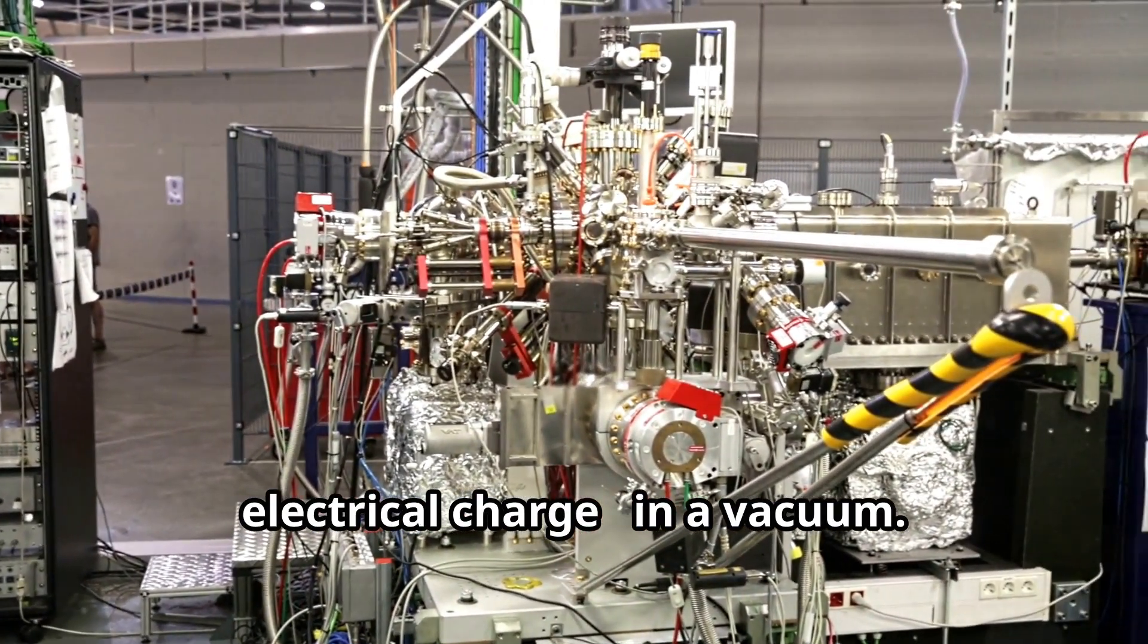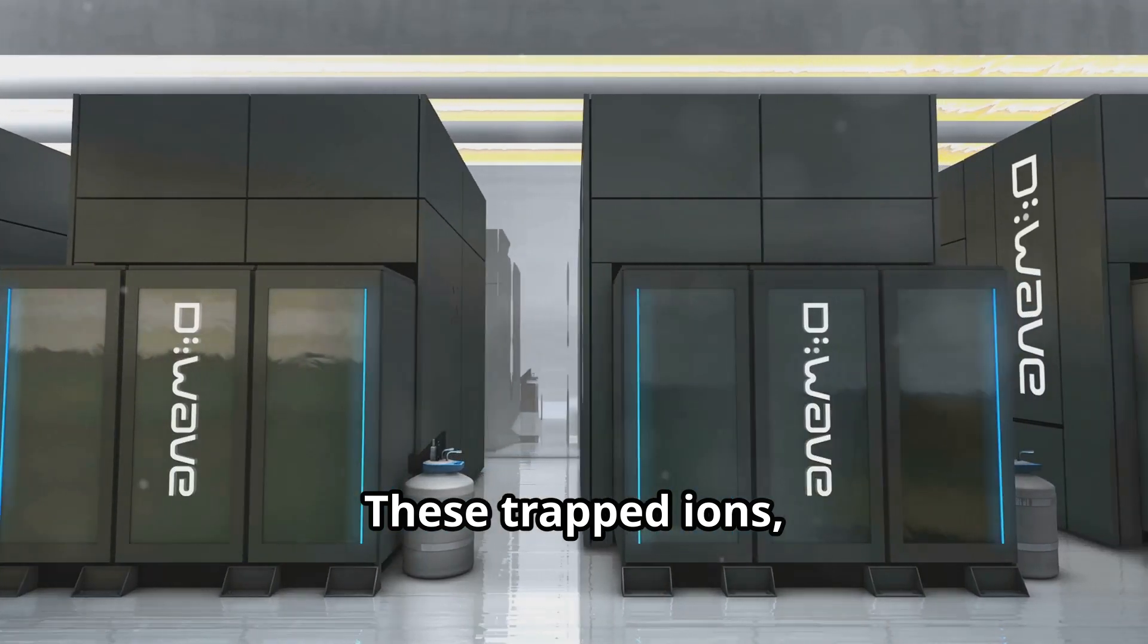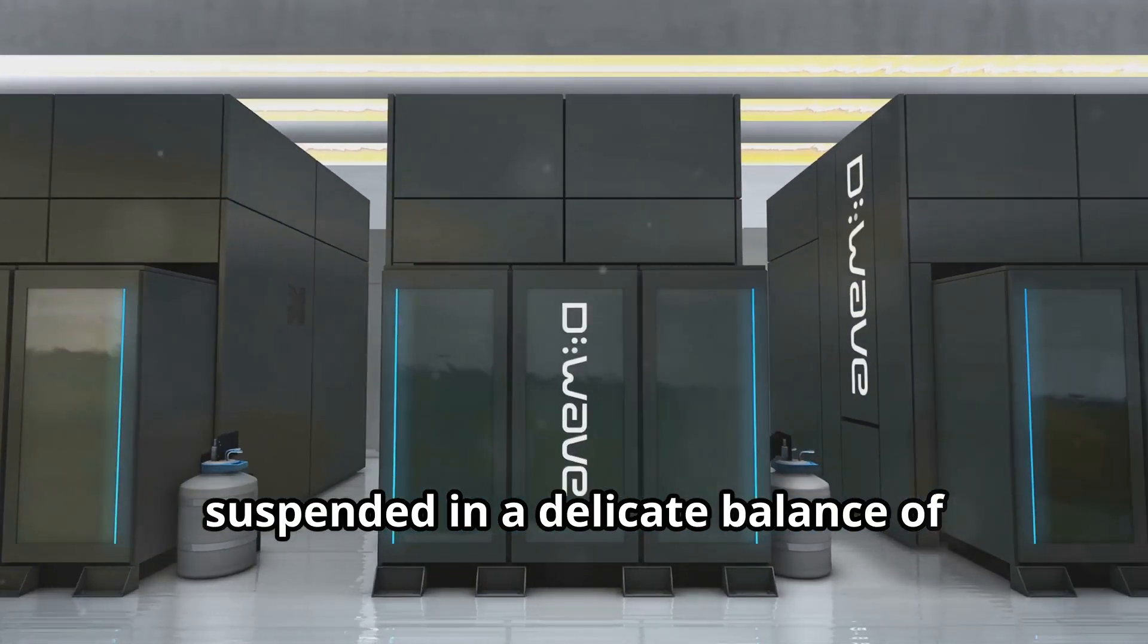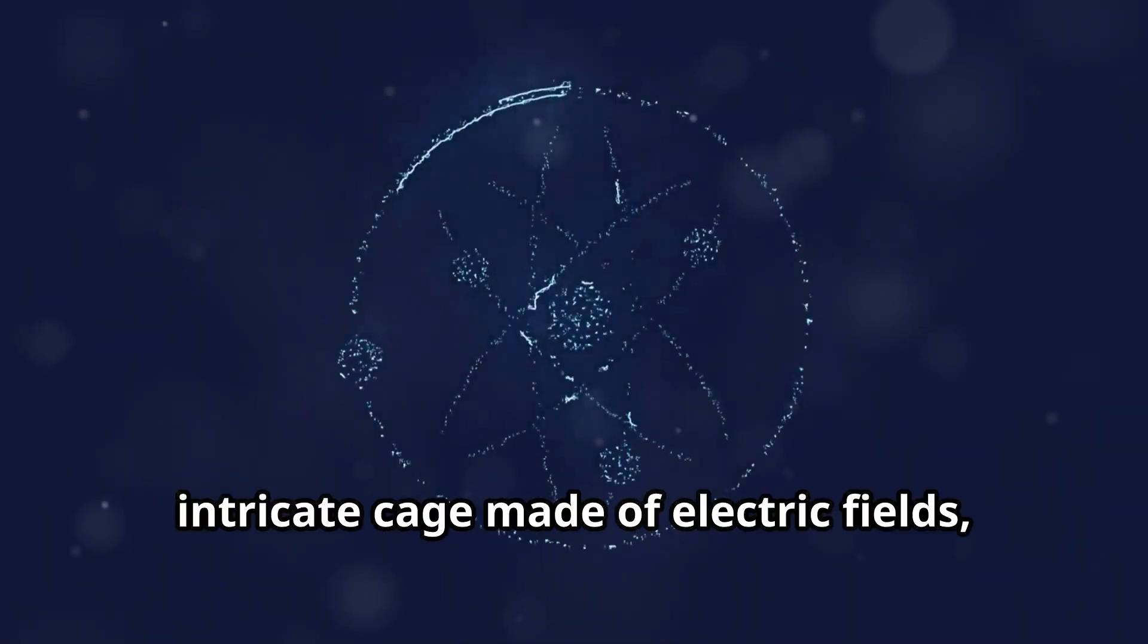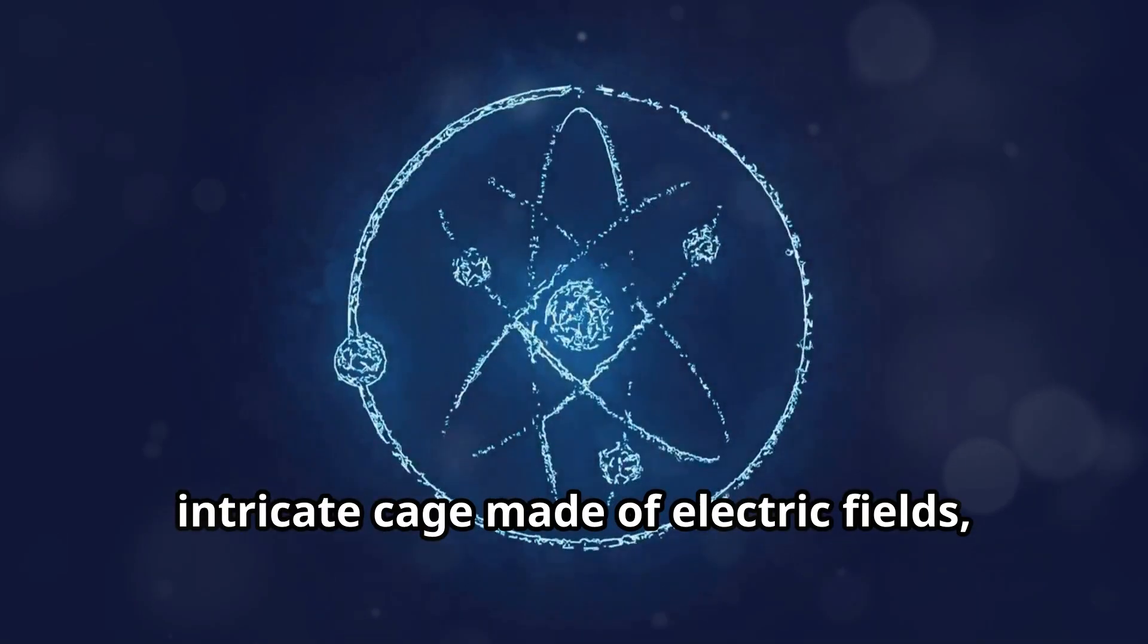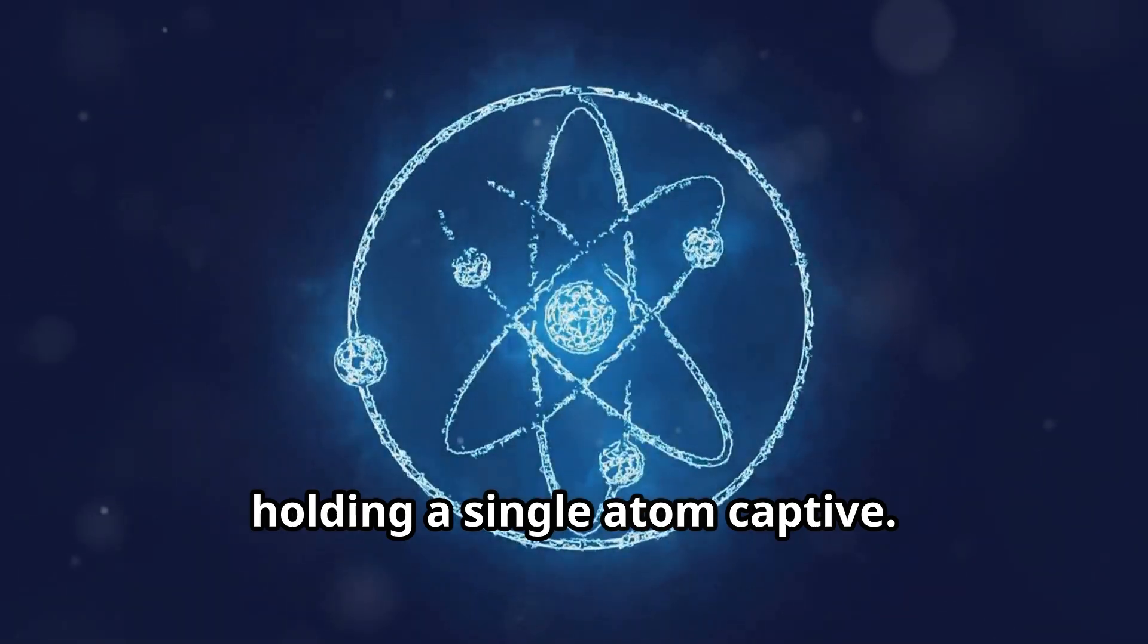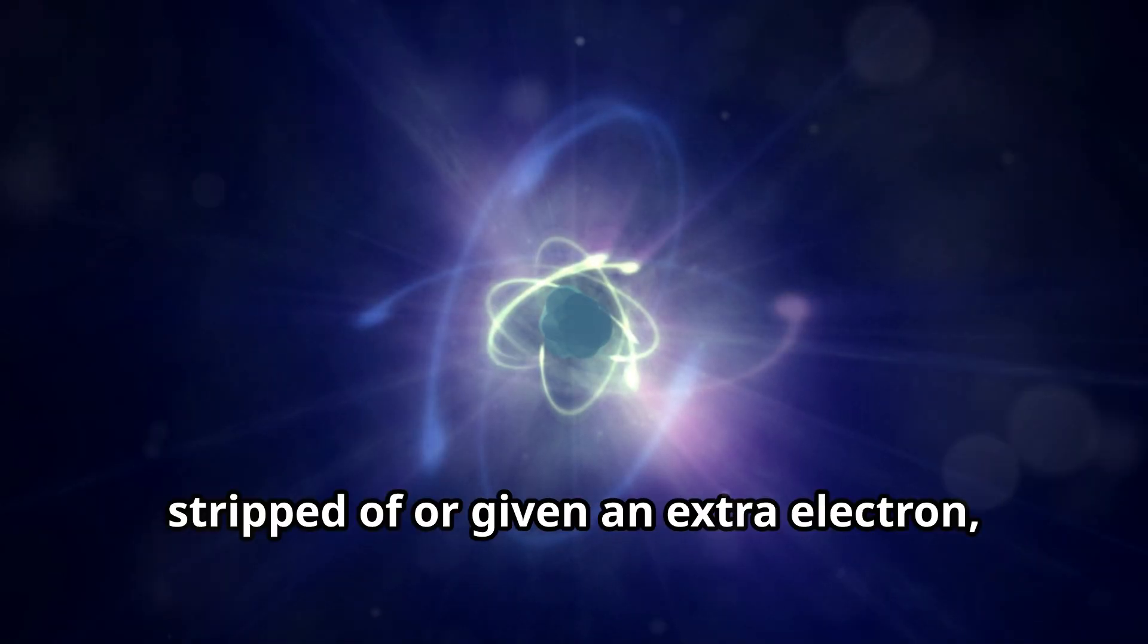These trapped ions, suspended in a delicate balance of electromagnetic forces, serve as the qubits. Picture a tiny, intricate cage made of electric fields holding a single atom captive. This atom, stripped of or given an extra electron, becomes an ion.